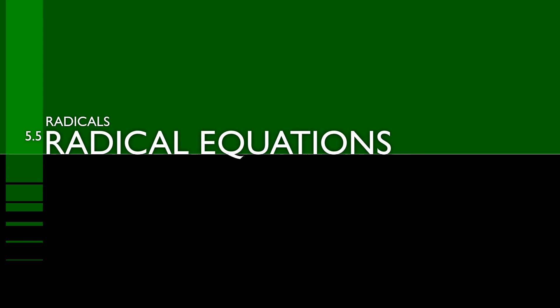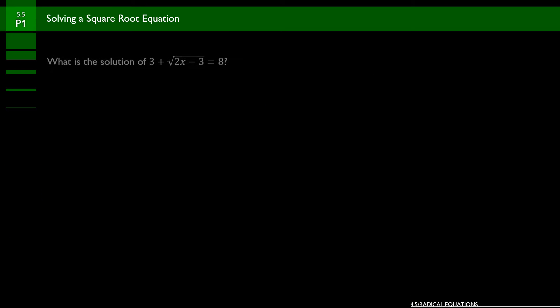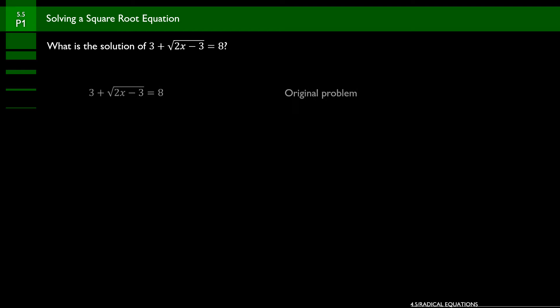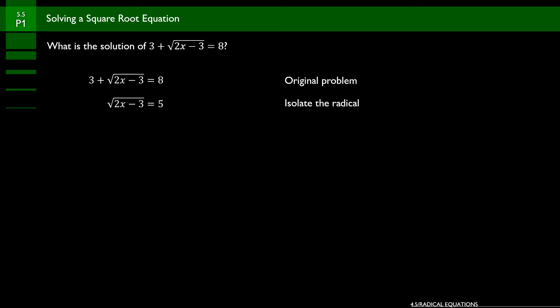In unit 5.5 we're going to look at radical equations. The first problem asks: what is the solution of 3 plus the square root of 2x minus 3 equals 8? The radical acts like a pair of parentheses, so we get rid of anything on the outside first, then take care of the radical, then the stuff underneath it. The first thing we do is subtract 3 from both sides, leaving us with the square root of 2x minus 3 equals 5.